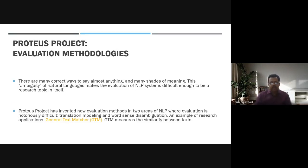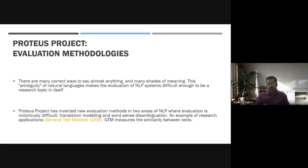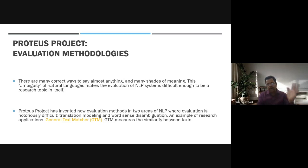Evaluation methods are various methodologies used in NLP and translation. Two areas where evaluation is important are translation models and word sense disambiguation. For example, the general text matcher (GTM) measures the similarity between texts, evaluating how successful a translation was — perhaps 50 percent match from one language to another.